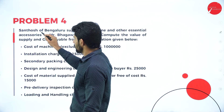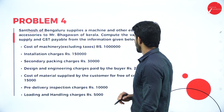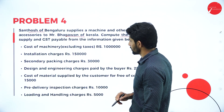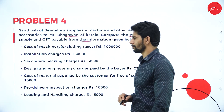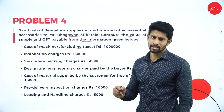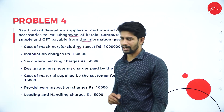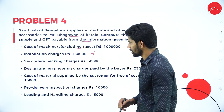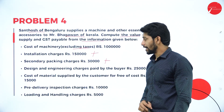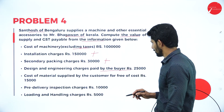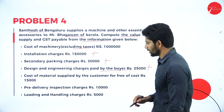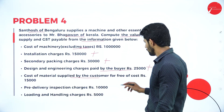Problem number 4: Santosh of Bengaluru supplies a machine and other essential accessories to Mr. Bhagwan of Kerala. Compute the value of supply and GST payable from the information given. The cost of machine excluding taxes is Rs. 10,00,000. Installation charges are given — add these. Secondary packing charges are given — add these. Design and engineering charges paid by the buyer — whether paid by the buyer or by the supplier on behalf of the buyer, these are to be added.